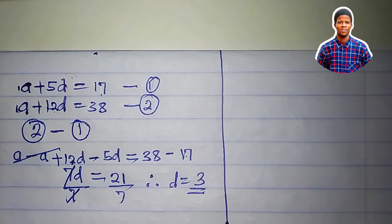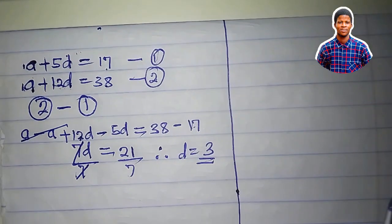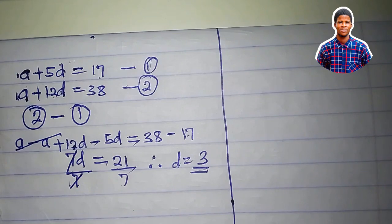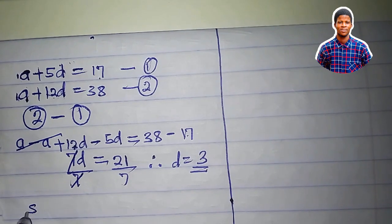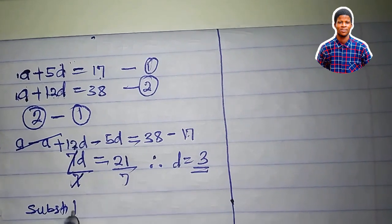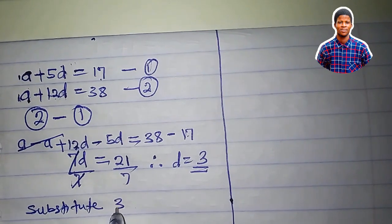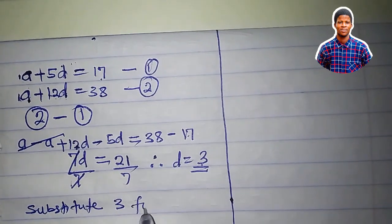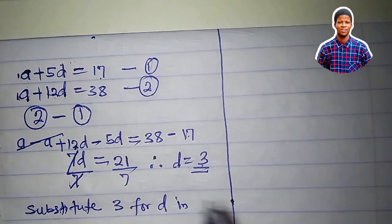So the common difference is 3. What will be the first term? To obtain the first term, I just have to substitute 3 for d in any of the equations.